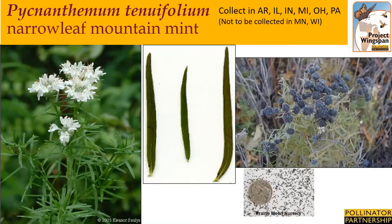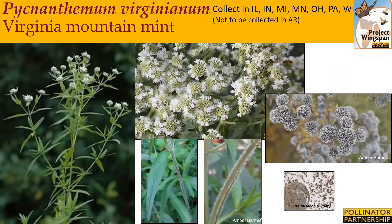Pycnanthemum tenuifolium, or narrow-leaf mountain mint, typically grows in the wild in dry, open, rocky woodlands, dry prairies, and fields. It's an erect, many-branched perennial that grows two to three feet tall and features extremely narrow, almost needle-like leaves. It produces profuse terminal clusters of small white flowers, which bloom in the mid to late summer. All parts of the plant emit a strong mint-like aroma when crushed. Collection time is typically in the late summer. The seed heads will turn from green to brownish-gray when ripe. Cut off the entire seed head and put it into the collection bag to dry.